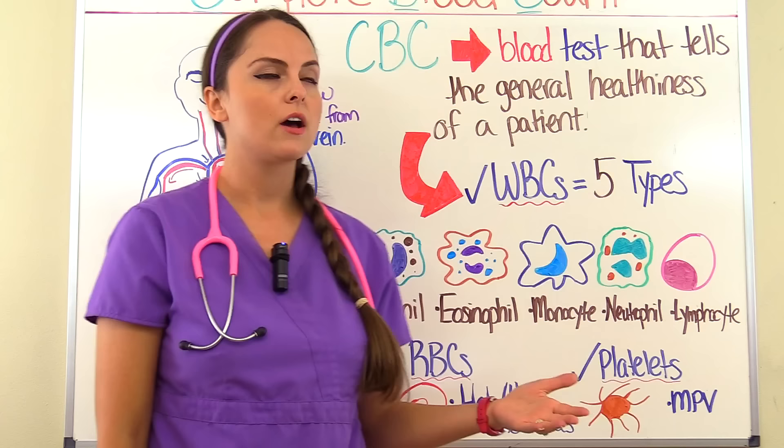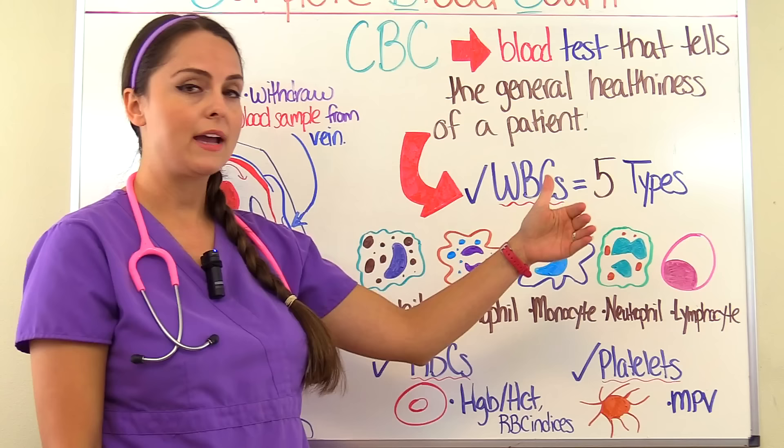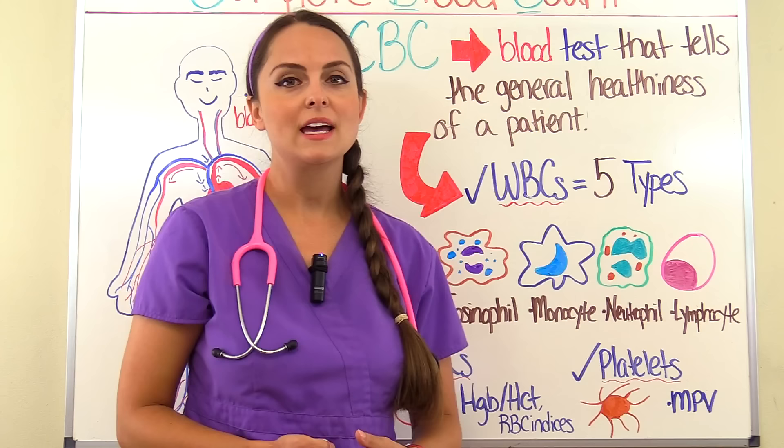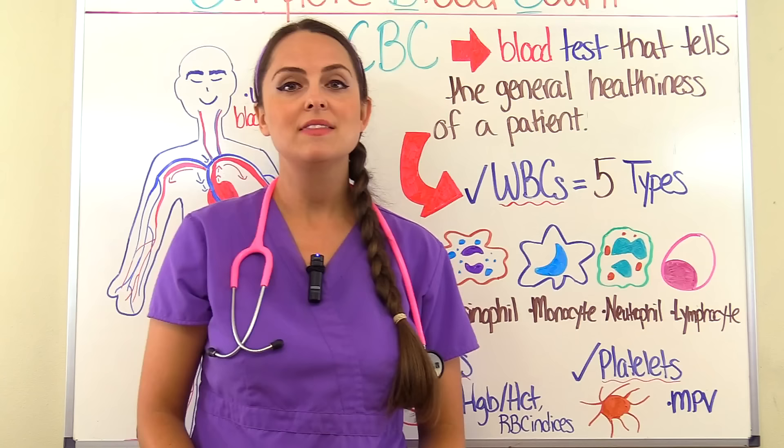Whenever you get the results, you'll have the patient's result right beside the normal range for whatever that area should fall within. This is great because you really need to know the normal ranges of white blood cells, red blood cells, hemoglobin, hematocrit, and platelets.